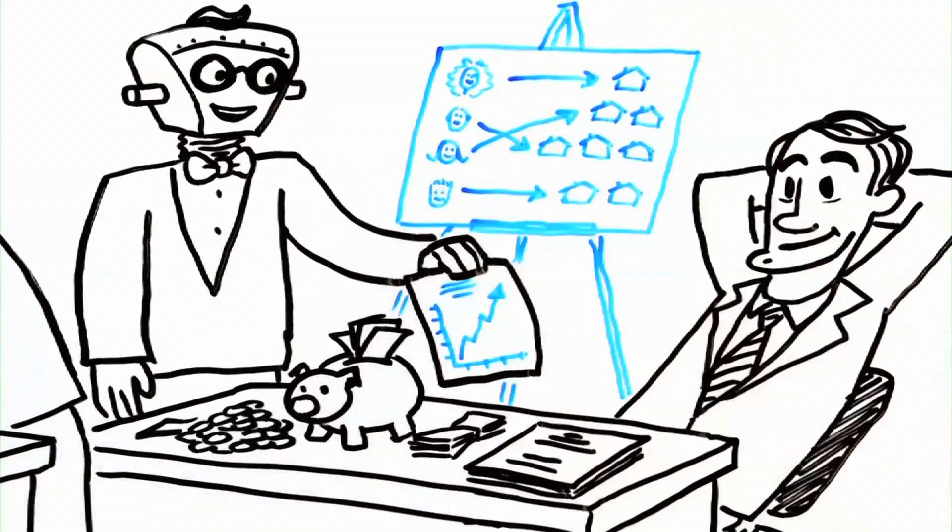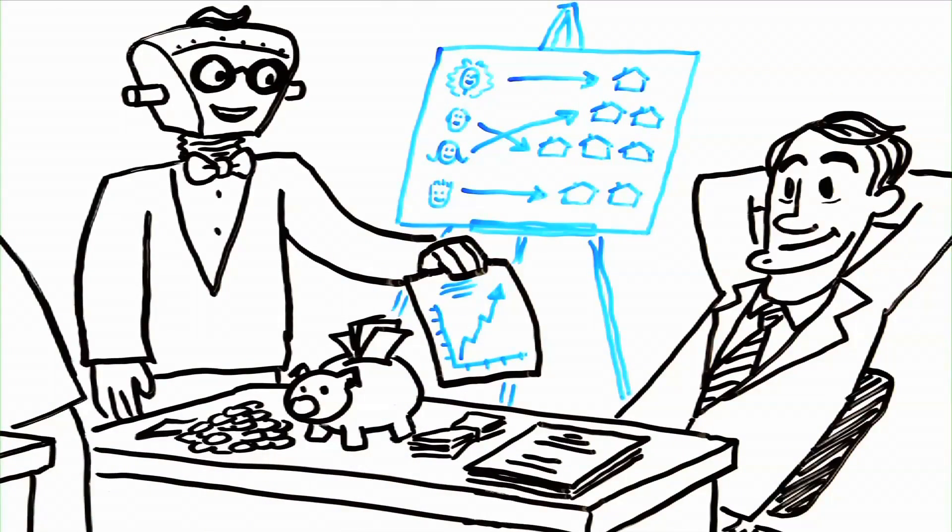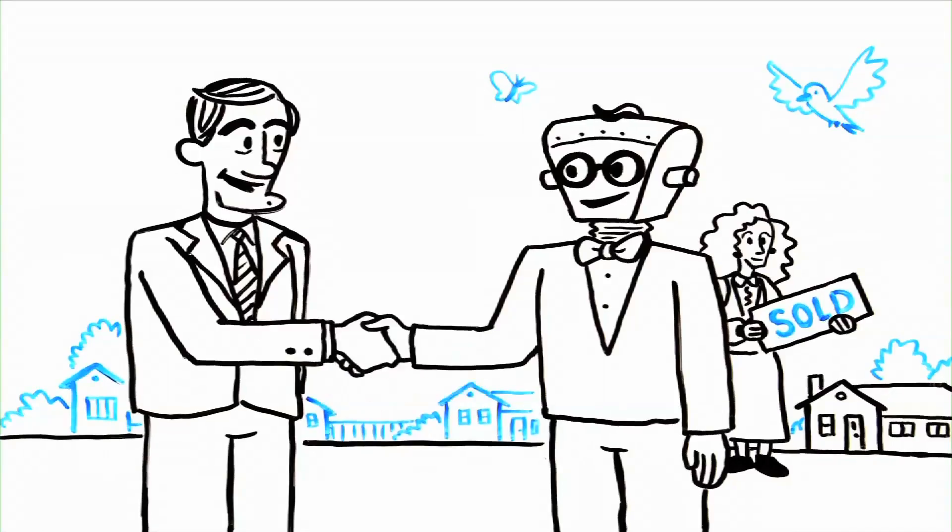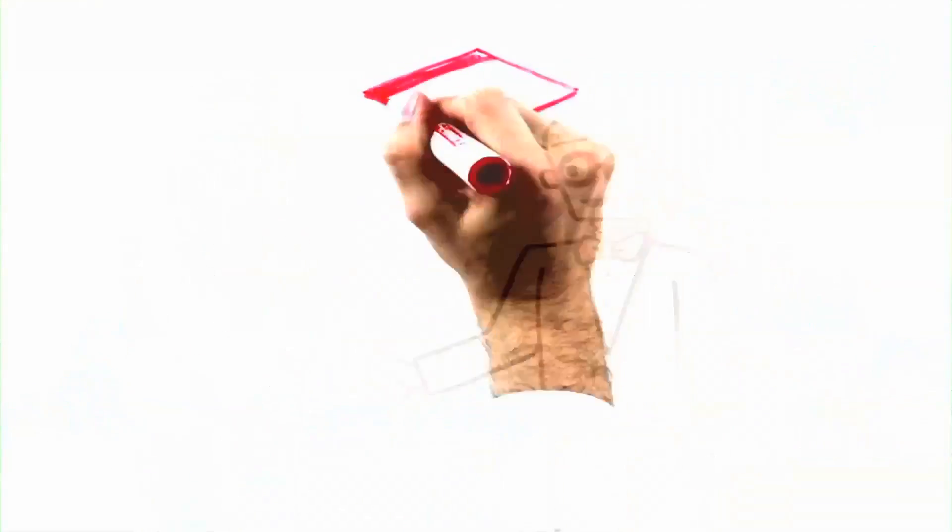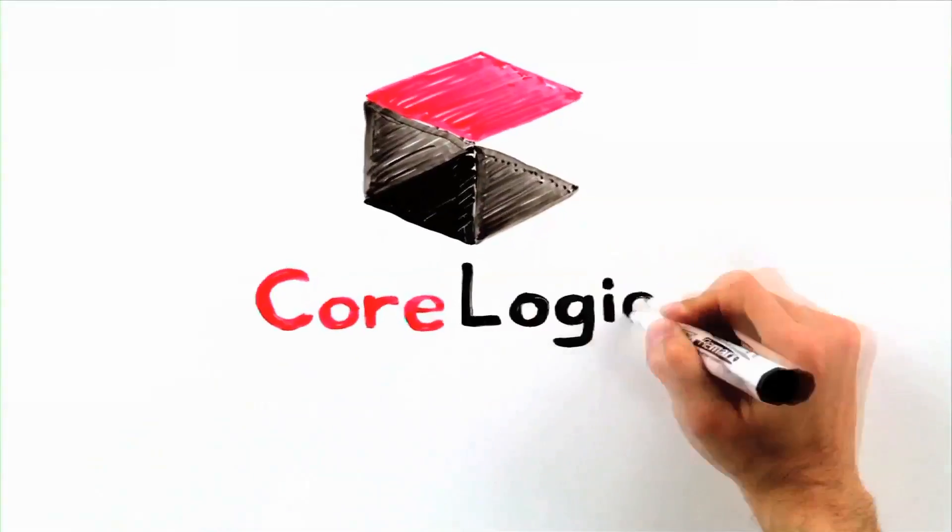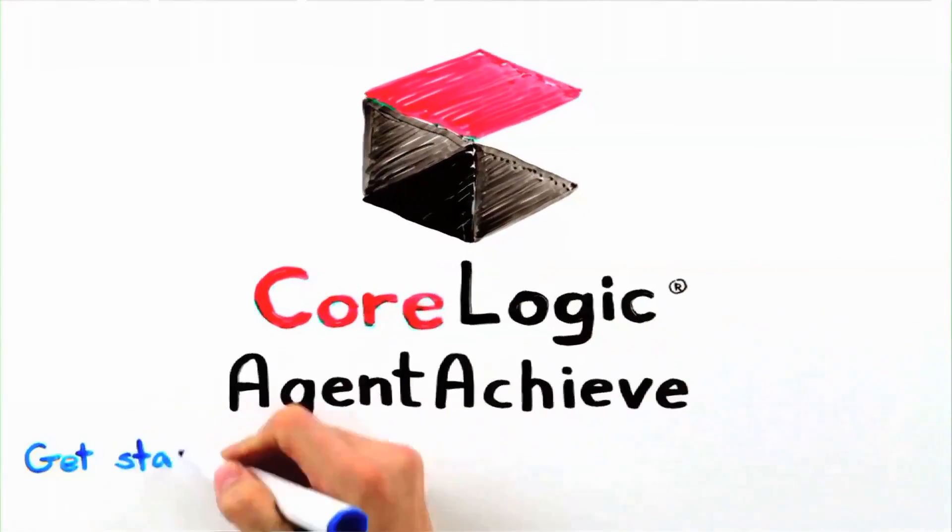Just like that, you've minimized technology costs and gained the competitive advantage. Whether you're a broker or an agent, it just makes sense. To get started today, visit agentachieve.com slash showmemore. Agent Achieve. Sell more houses.